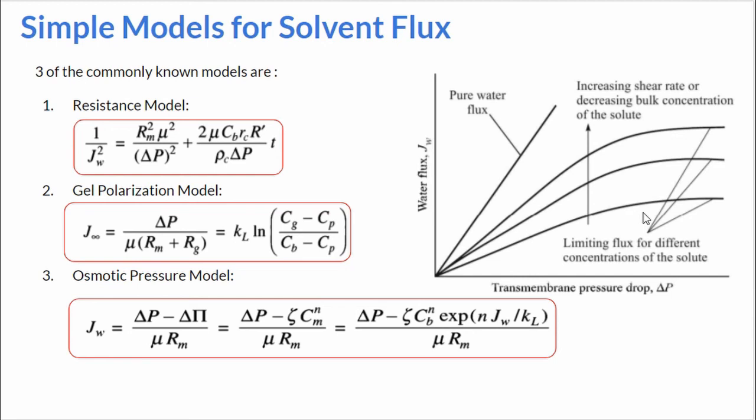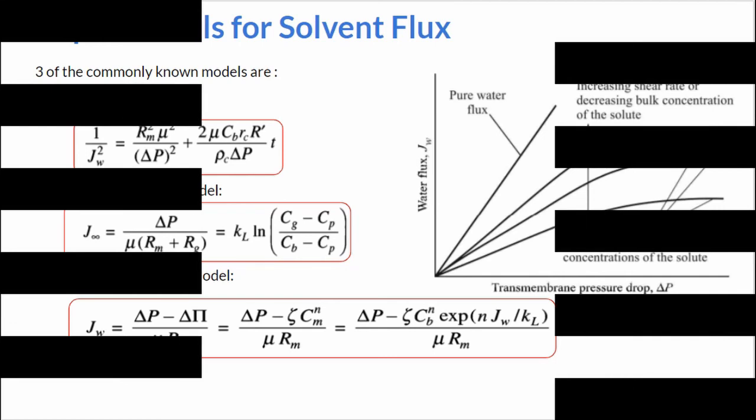The third model is the osmotic pressure model. In this case, the conclusion is derived from the Van't Hoff equation, and the osmotic pressure of a macromolecule can be described by a power law dependence on concentration. Using these, we reach the third equation where the flux is described using the difference of Δp and Δπ.